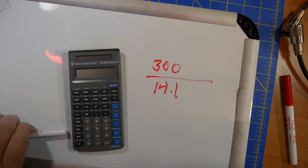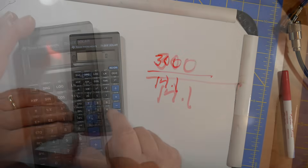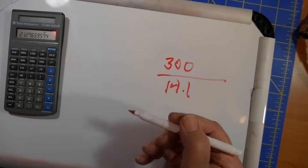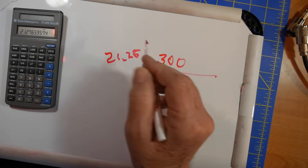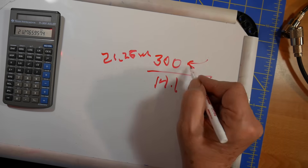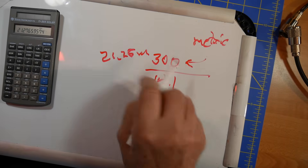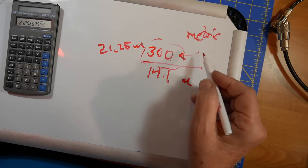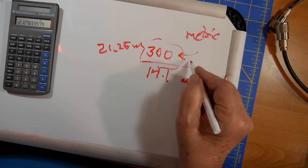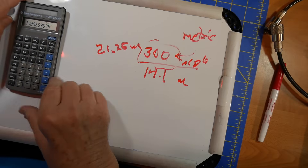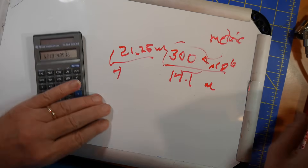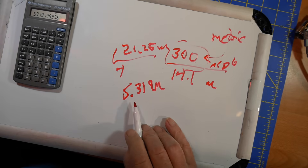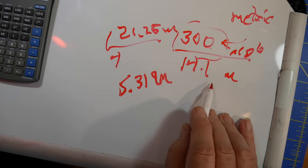I got this calculator when I was in the Air Force a million years ago — it's a solar calculator and it still works. 300 divided by 14.1 gives us 21.28 meters. Now this is without taking into account any velocity factor, and it's in metric. We then divide by four to get a quarter wavelength: 5.319 meters is how far light will travel one quarter wavelength at that frequency in a vacuum.